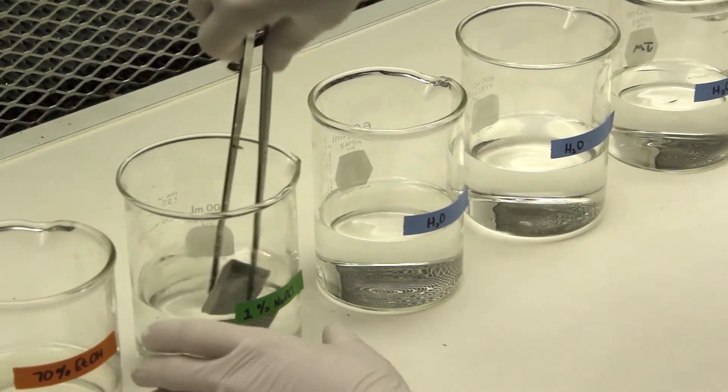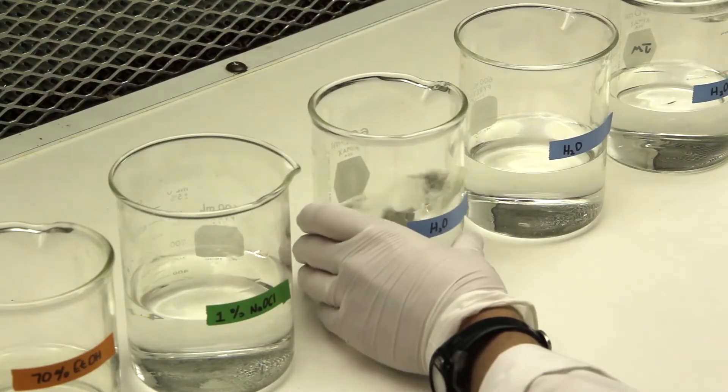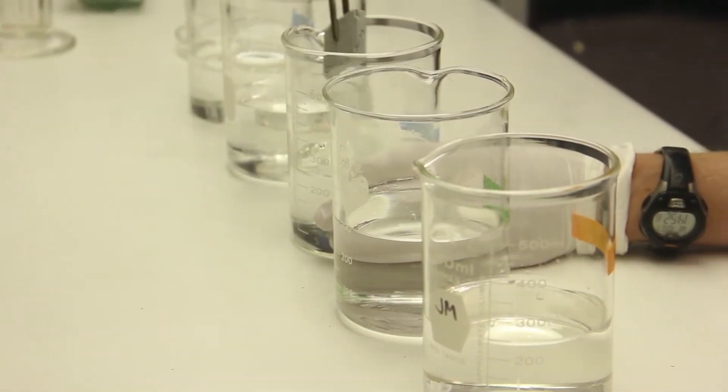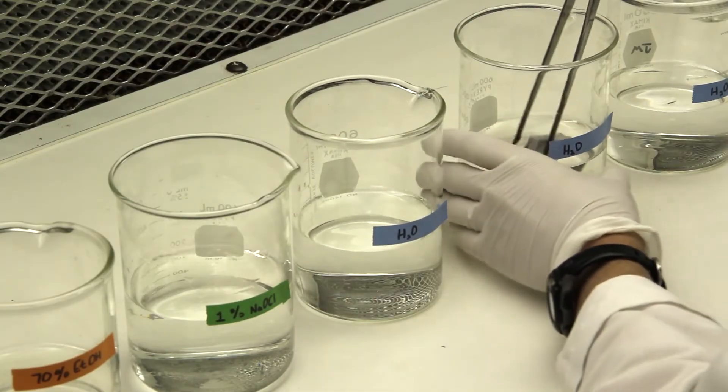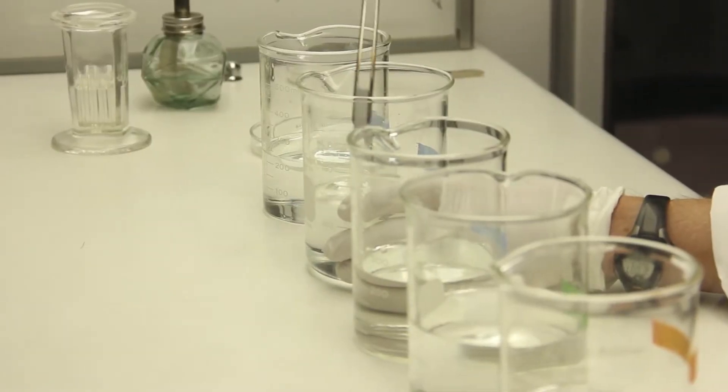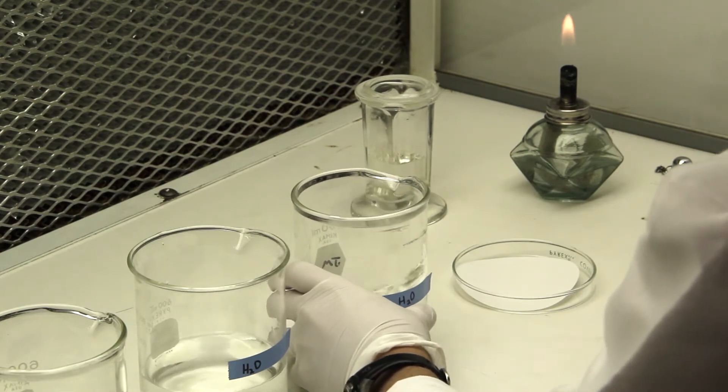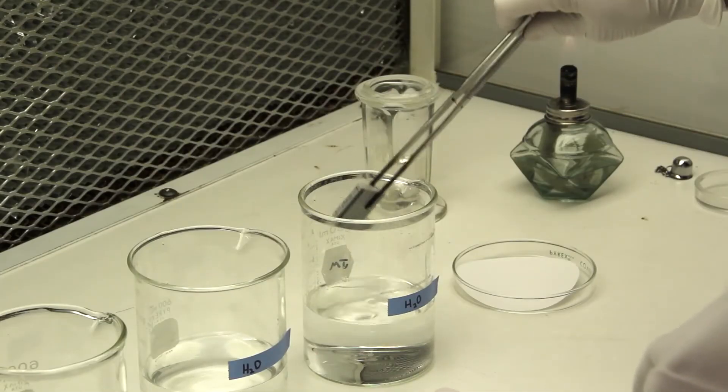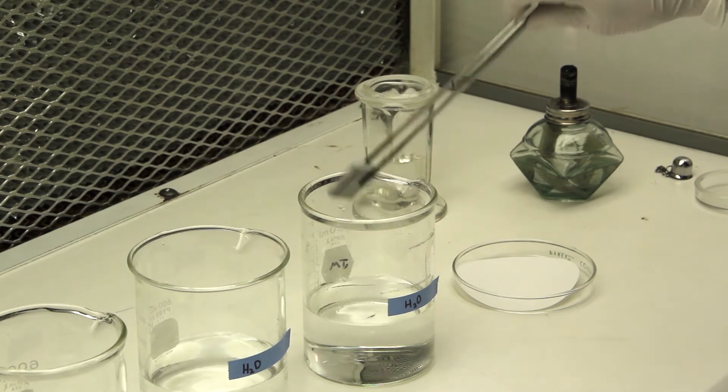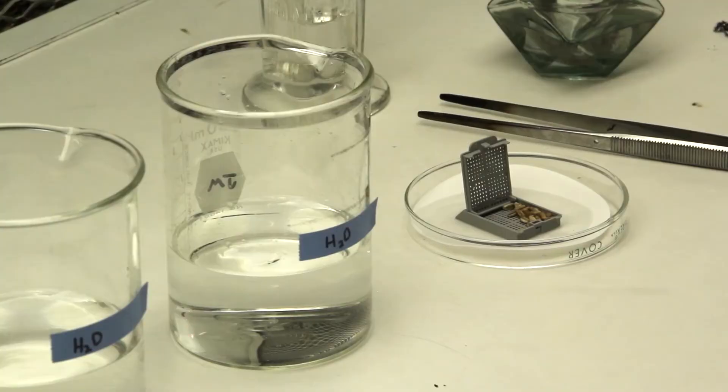This is followed by several beakers of distilled, sterilized water. And then we allow the microcassette to dry in a petri dish before we plate the seeds on Komada's media.